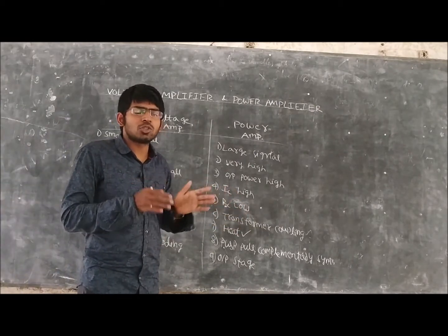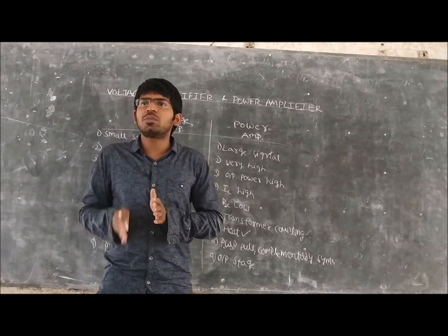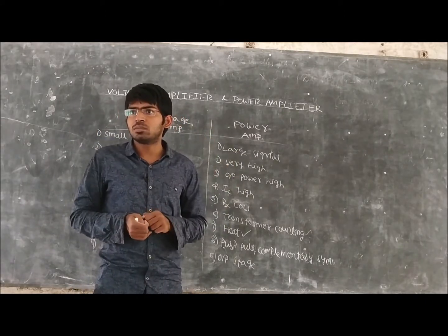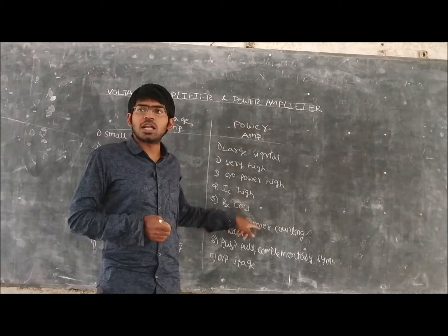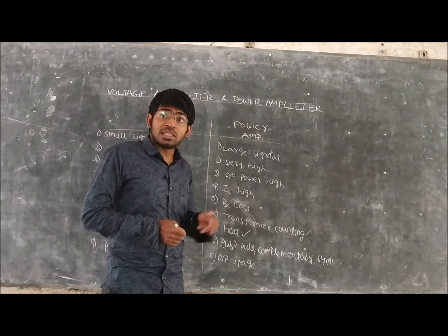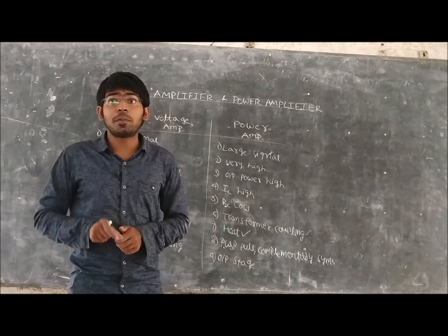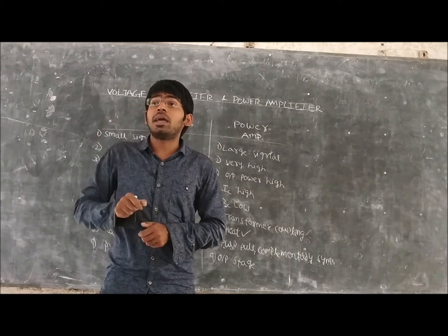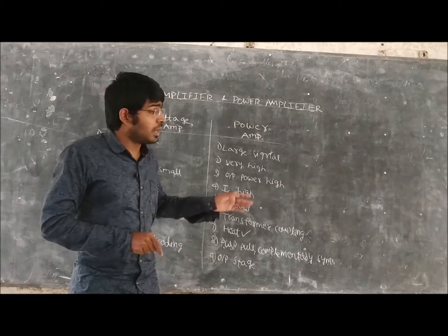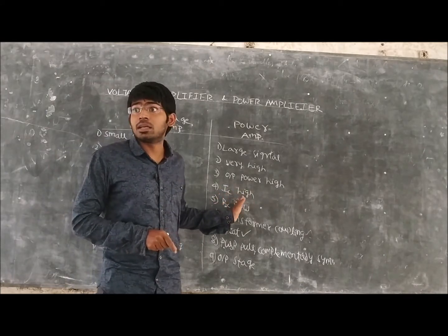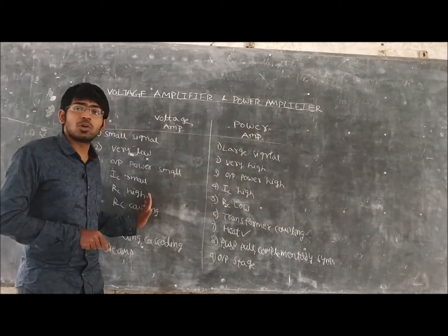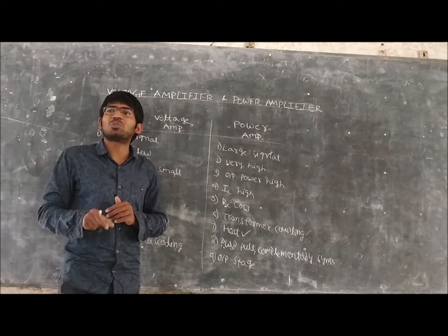Transformer coupling ensures that the impedance is properly matched. When the source impedance and the load impedance are properly matched, maximum power can be transferred — that is why we use transformer coupling in the power amplifier. The power amplifier gives high output power and high current IC. With this high current and high power, heat is generated, so the output-generated heat is high in the power amplifier, whereas at the output of the voltage amplifier we do not observe that much heat.